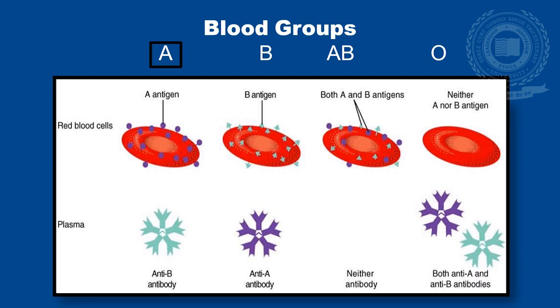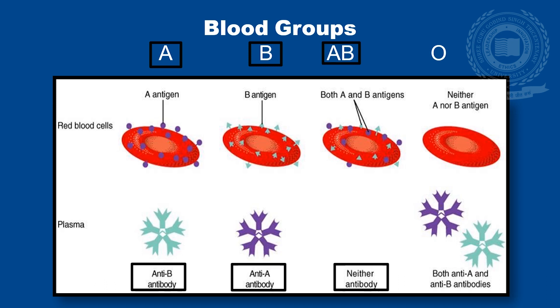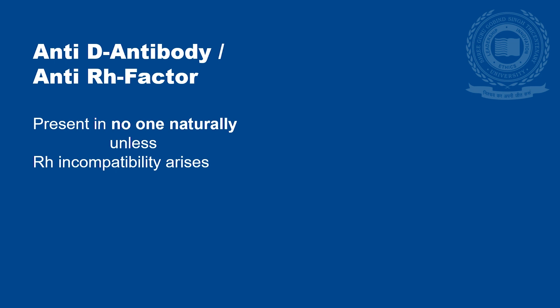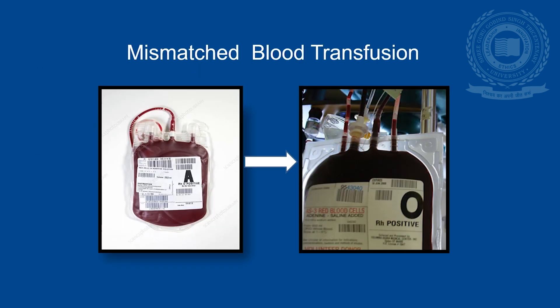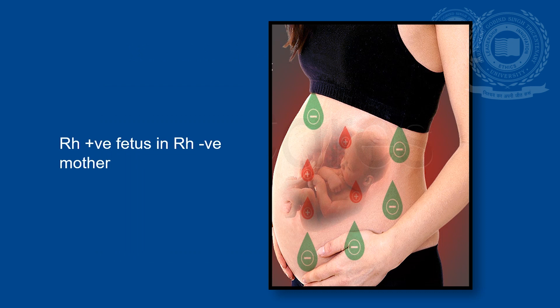In blood group A, anti-B antibody is present in plasma. In blood group B, anti-A antibody is present in plasma. In blood group AB, neither antibody is present. Blood group O has both anti-A and anti-B antibodies. Anti-D antibody, also called as anti-Rh factor, is not present in anyone naturally unless Rh incompatibility arises — due to mismatched blood transfusion or in case of an Rh positive fetus in an Rh negative mother.